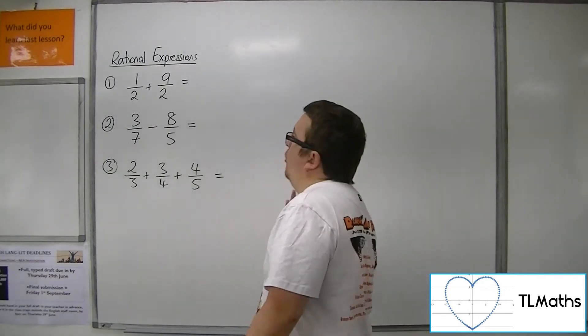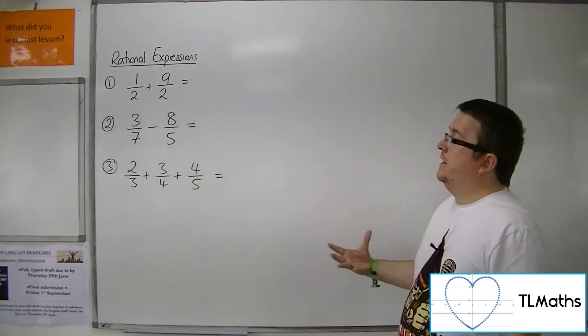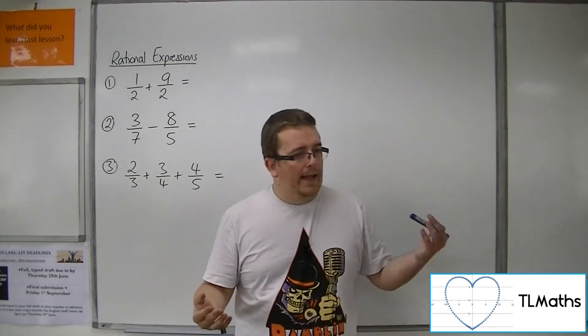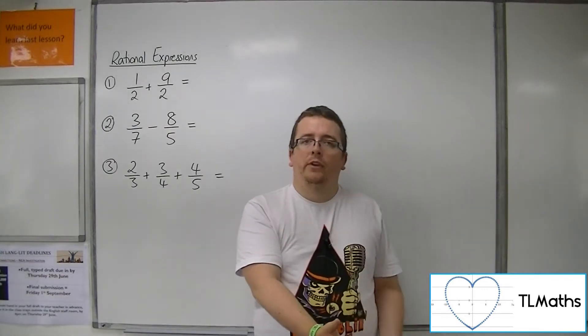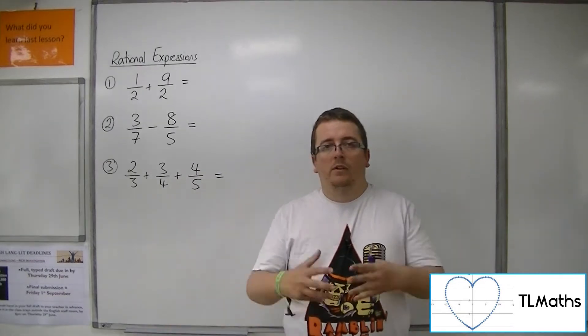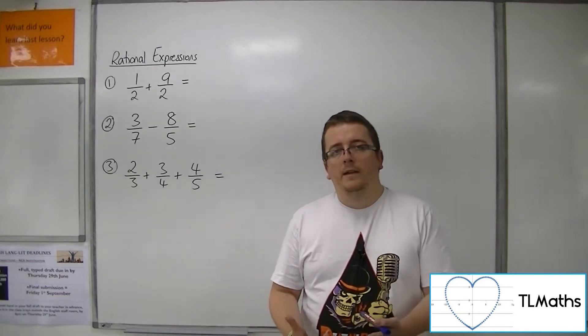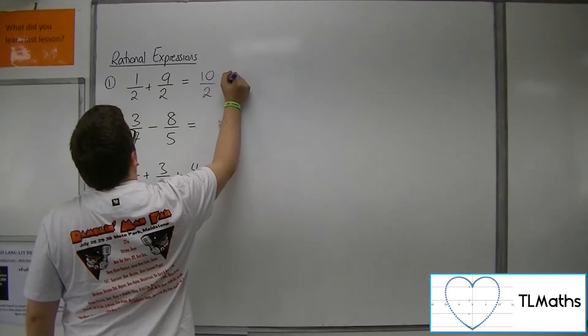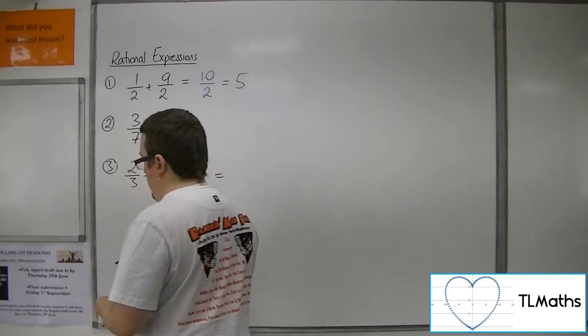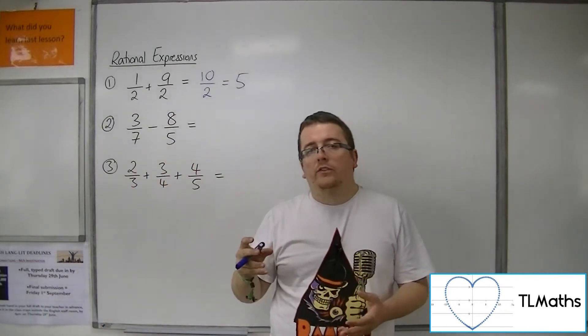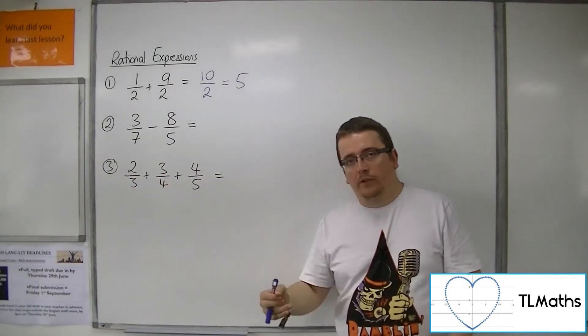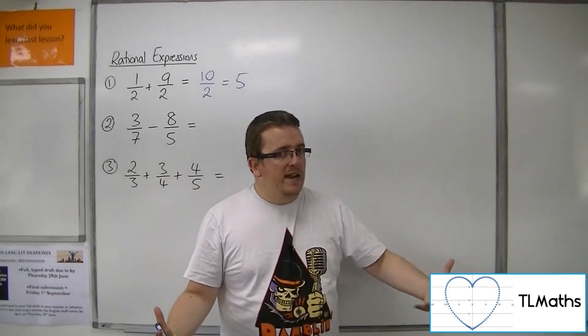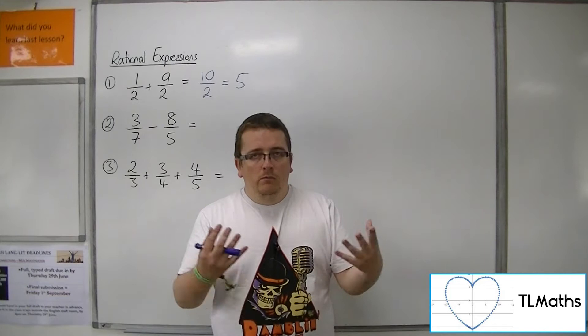Let's have a look at number 1. Now we've got 1 half plus 9 halves. So I've got 1 half and 9 halves. So all together I must have 10 halves. So this concept of adding fractions together is really linking back to your understanding of algebra. Because if you've got 1a and you've got 9as, then all together you've got 10as.